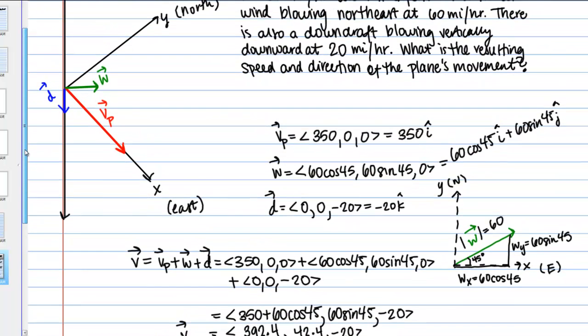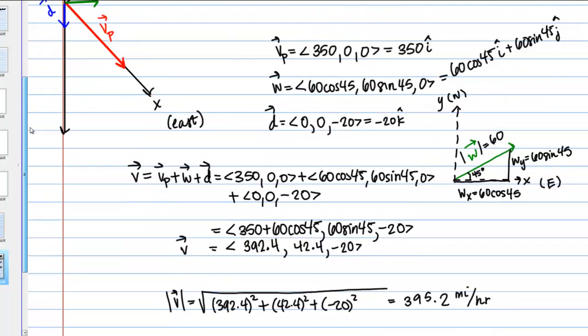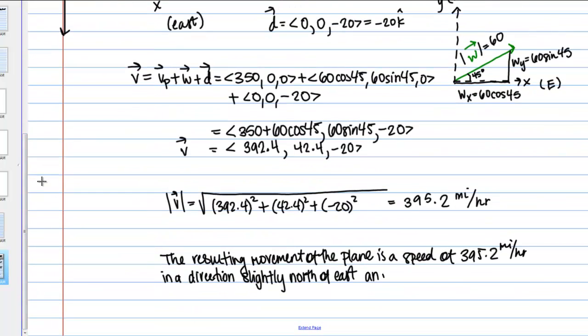And then same with this downward draft. The magnitude of this is small compared with the velocity of the plane. So it's going to only affect its movement slightly. And we'll say slightly downward.